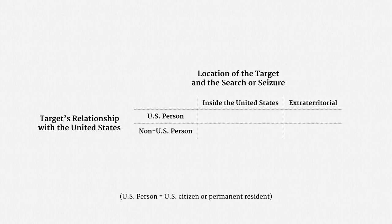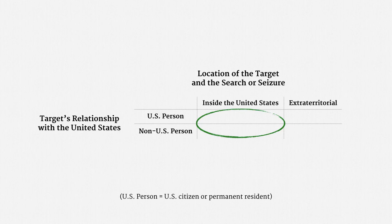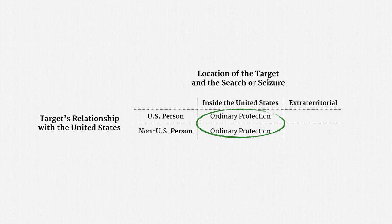We're going to challenge that assumption soon. Let's get started with the easiest two categories, where the target and the surveillance are both inside the United States. Those are the fact patterns we've seen so far in the course, and all the ordinary Fourth Amendment protections apply. If you're a foreign citizen traveling in the United States and the government snoops on you within the United States, you're protected just like an American citizen. So those two categories were pretty easy.